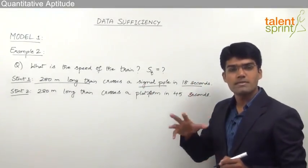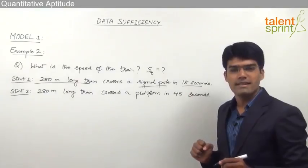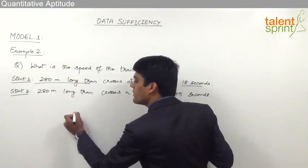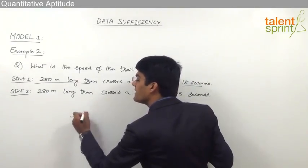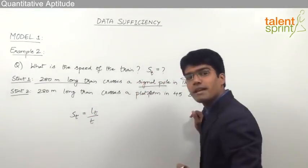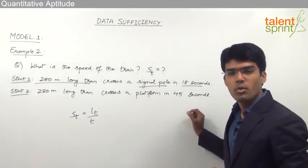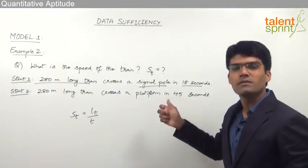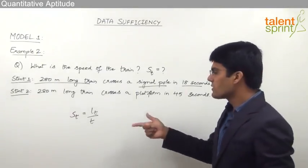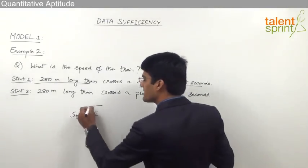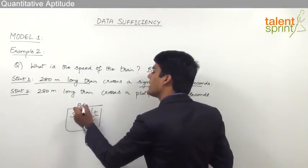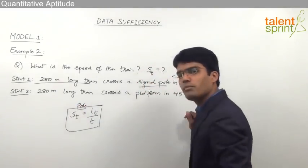From Statement 1, we know the length of the train is 280 meters and it crosses a signal pole in 18 seconds. From the concepts of time and distance, when a train is crossing a pole, the equation is: speed of the train = length of the train ÷ time. This is because when crossing a pole, the length of the other body is 0 and its speed is also 0.